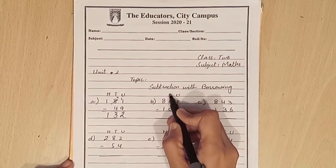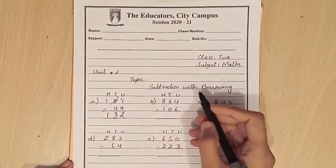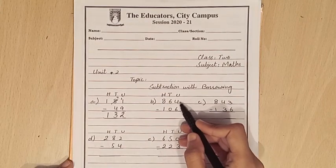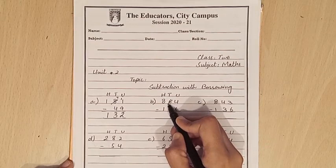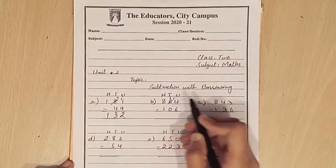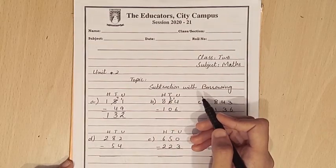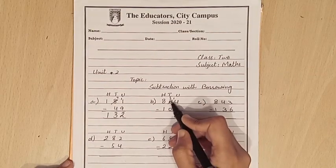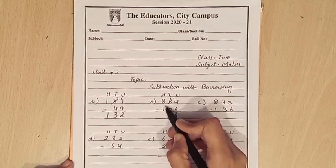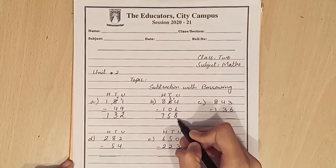Next, unit, 10, 100. We will start from the unit side, right side. 4 is smaller than 6. When we have a smaller number, we will borrow the number. Now we have 14. We subtract 6. The answer is 8. 5 minus 0 is 5. 8 minus 1 is 7. 758.